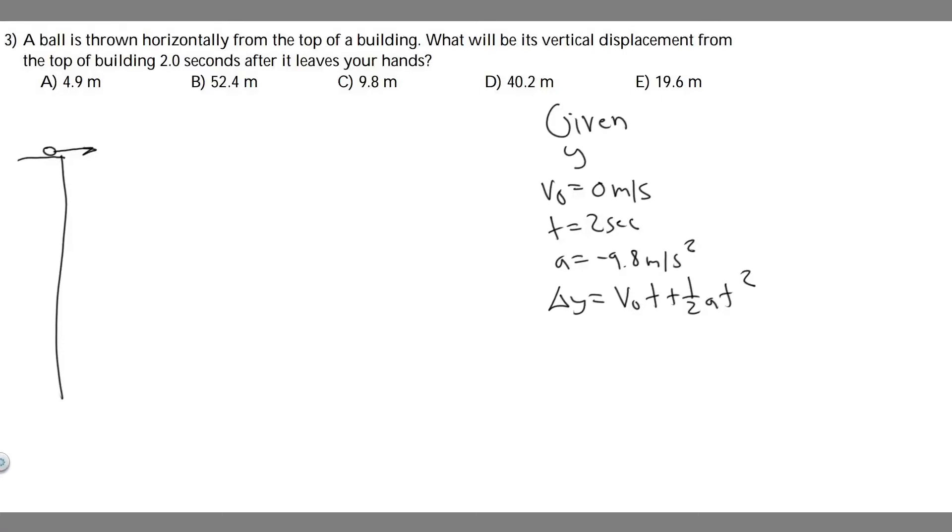In this problem, we're told a ball is thrown horizontally from the top of a building. What will its vertical displacement be from the top of a building two seconds after it leaves your hand? So in this problem, what we're going to be solving for is basically delta y. So we can say delta y equals question mark.